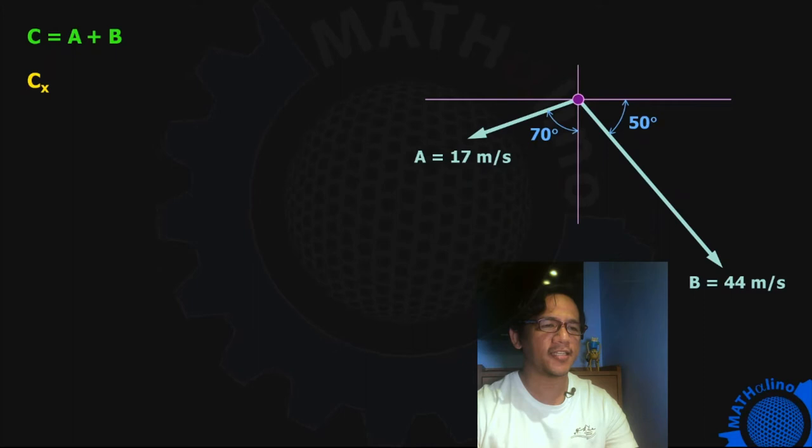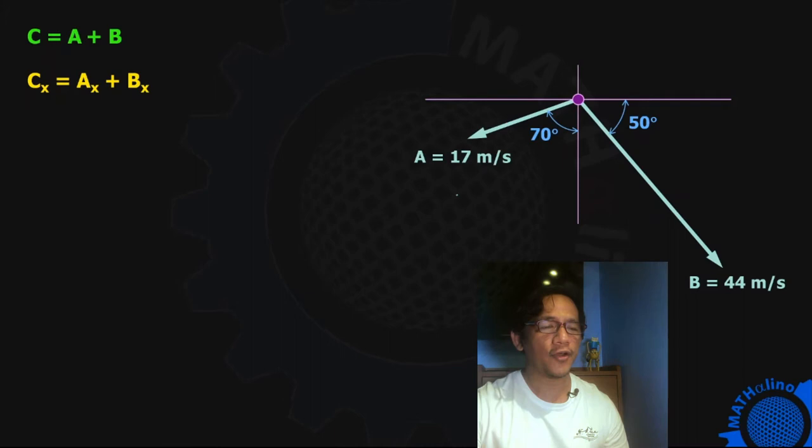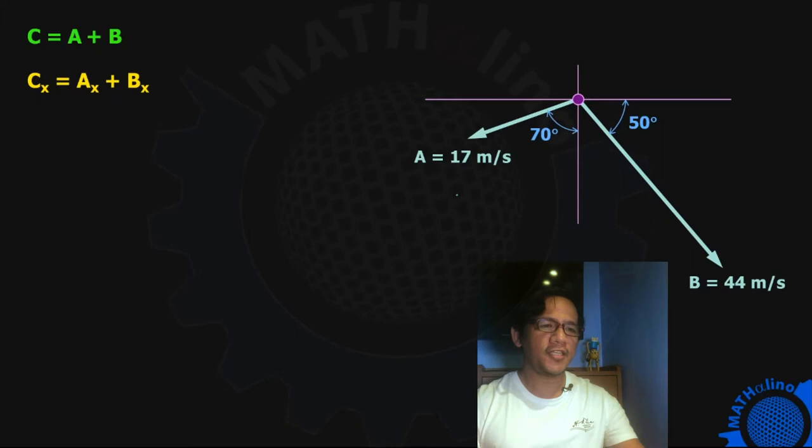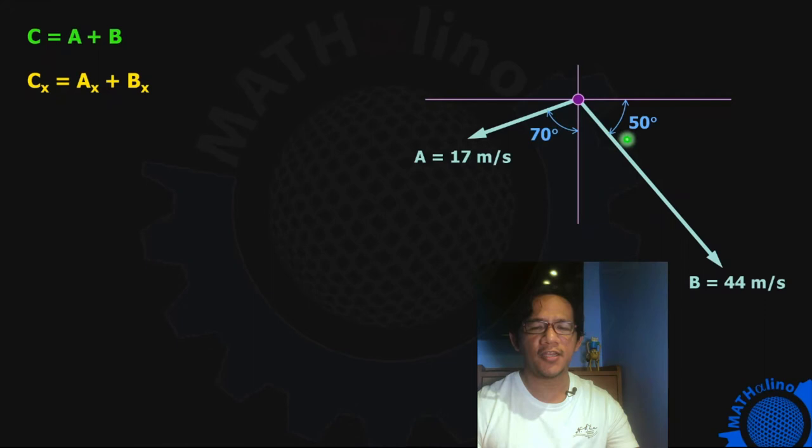We have CX, the X component of our resultant C. We are going to add the horizontal component of A and the horizontal component of B. If you notice, for vector A, the measurement of the direction is from the vertical — the 70 degrees — while for vector B, the angle is measured from the horizontal, 50 degrees. Be mindful of that because we are going to use sine and cosine.